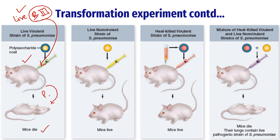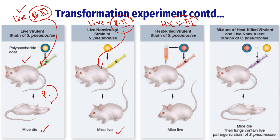In the second stage, he injected the mouse with live R2 strain. As we know, live R2 strain is non-virulent, and therefore when he injected the mouse with R2, the mice survived. In the third stage, he used heat-killed smooth S3 strain. Since there were no live S3 bacteria, the mouse was able to survive and no pneumonia was reported.